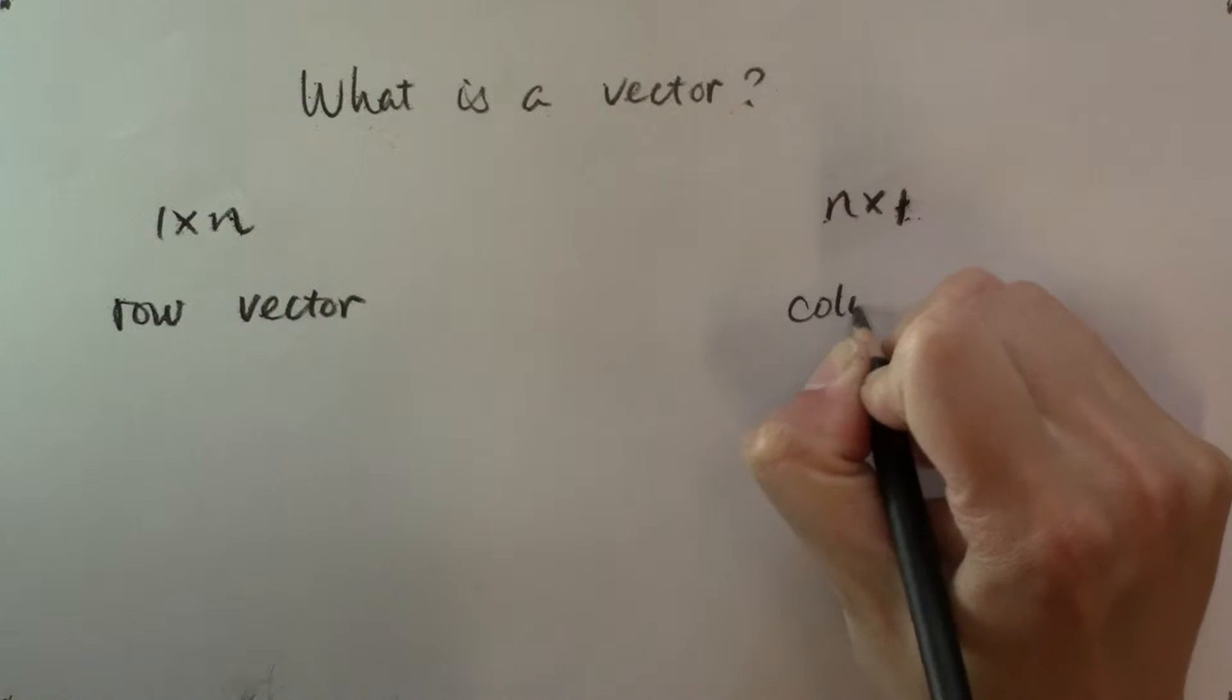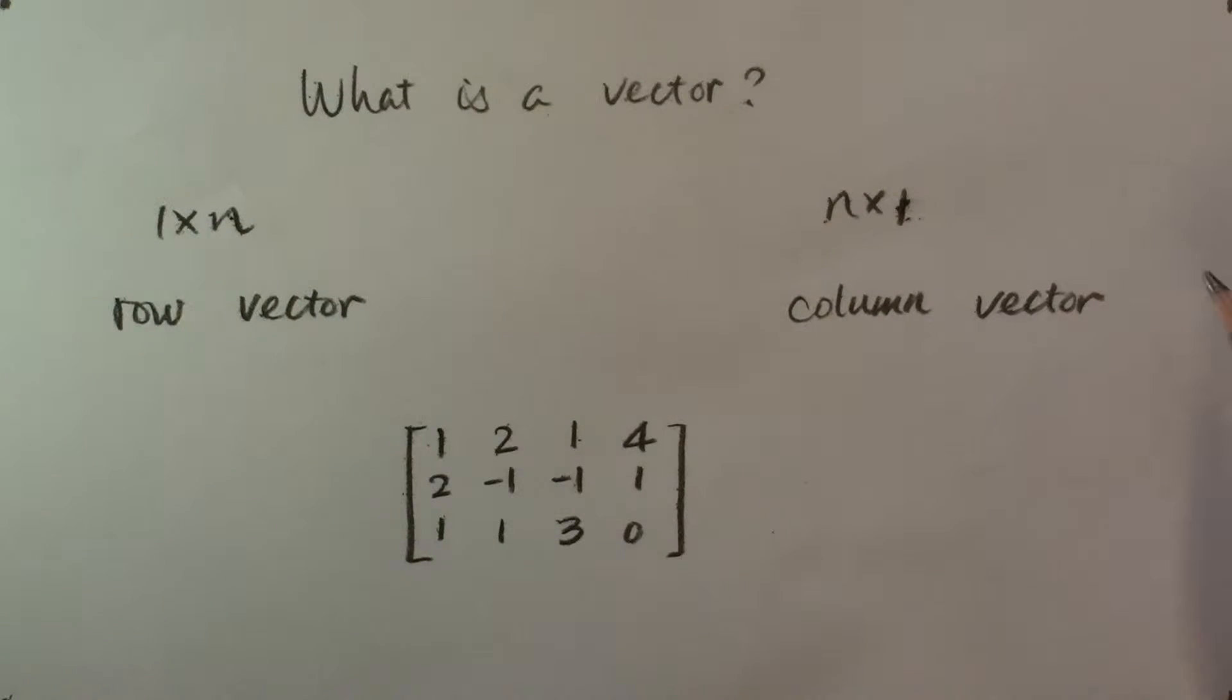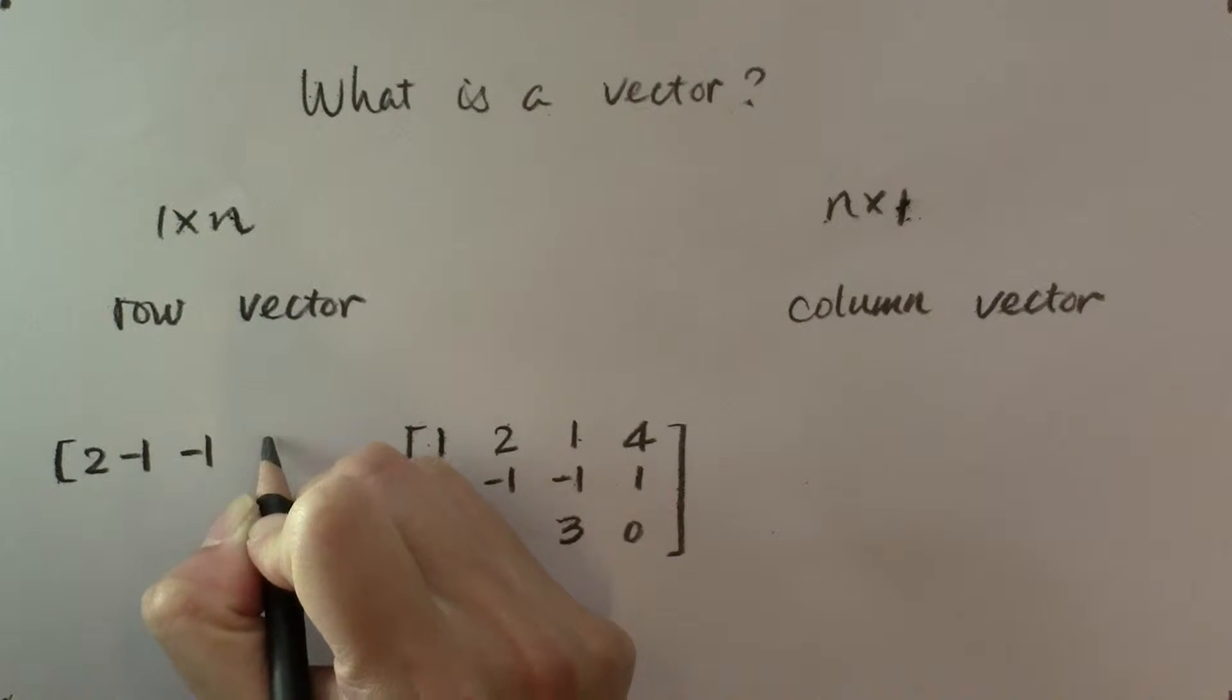It is obvious that each row of a matrix forms a row vector by itself. For example, the second row of this matrix is the row vector 2, negative 1, negative 1, 1.